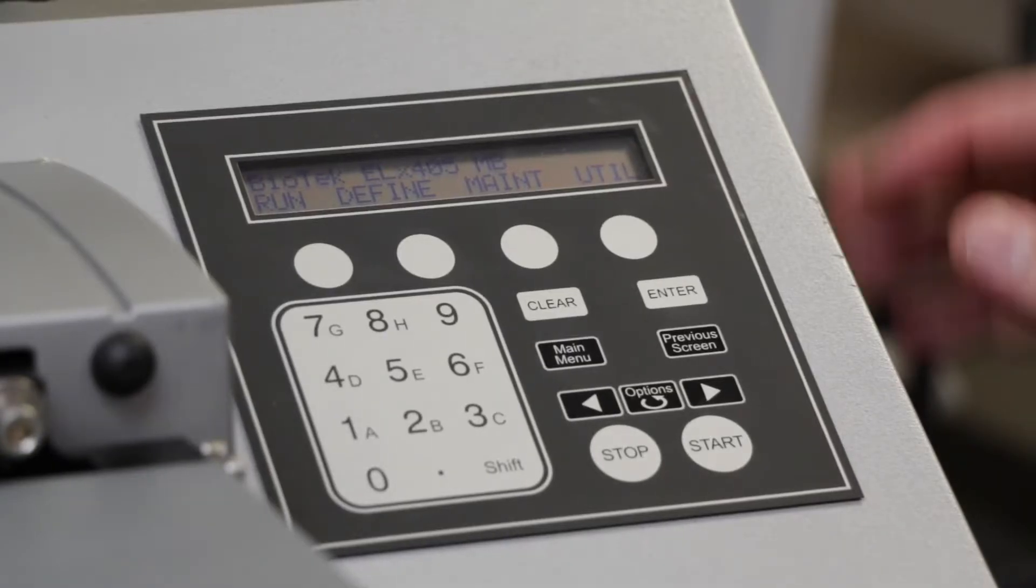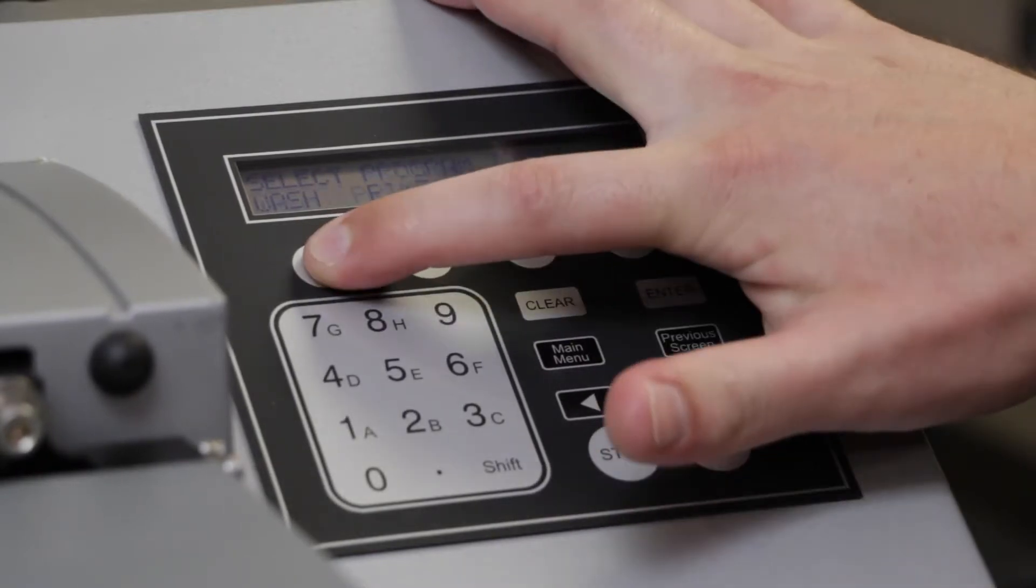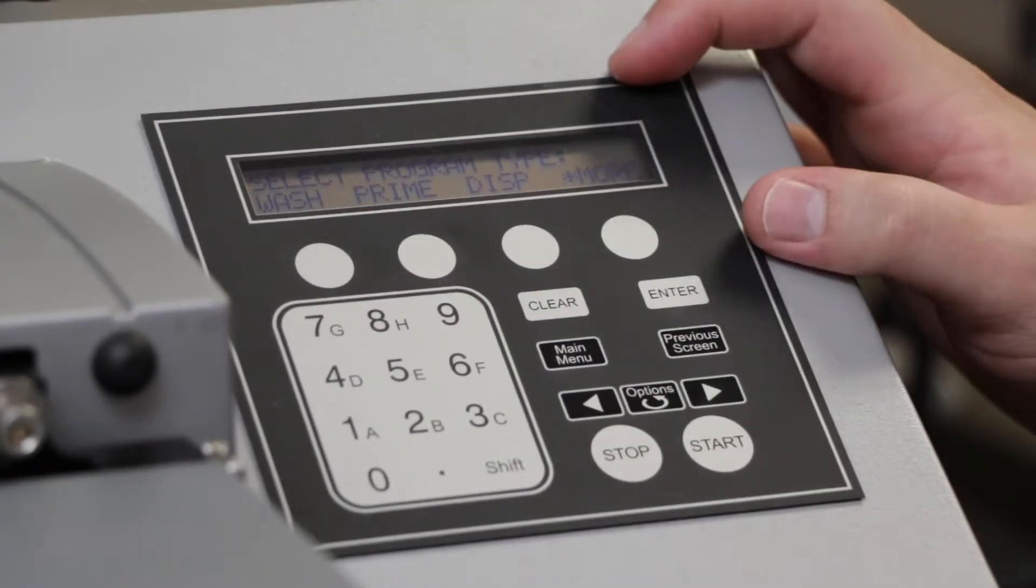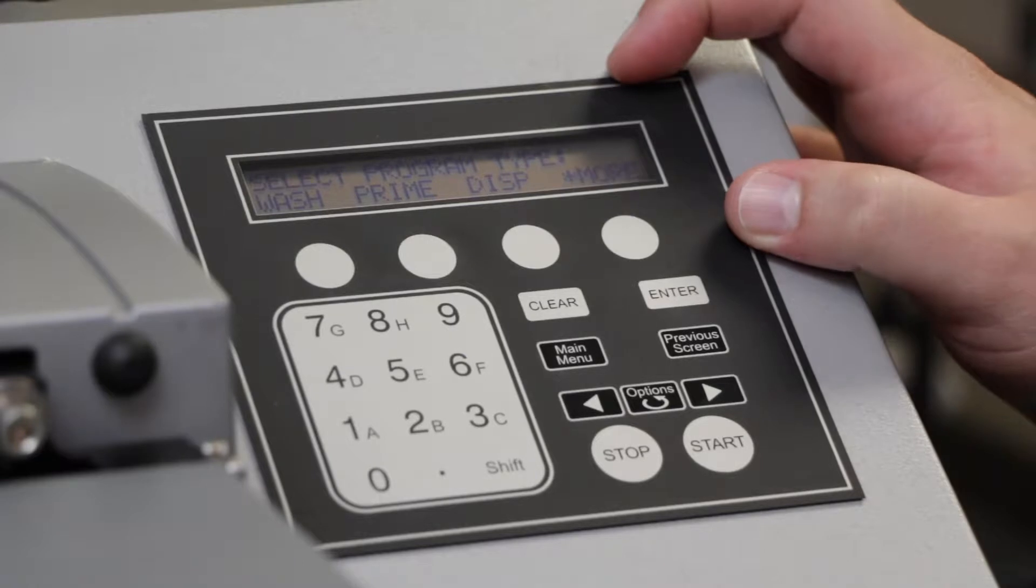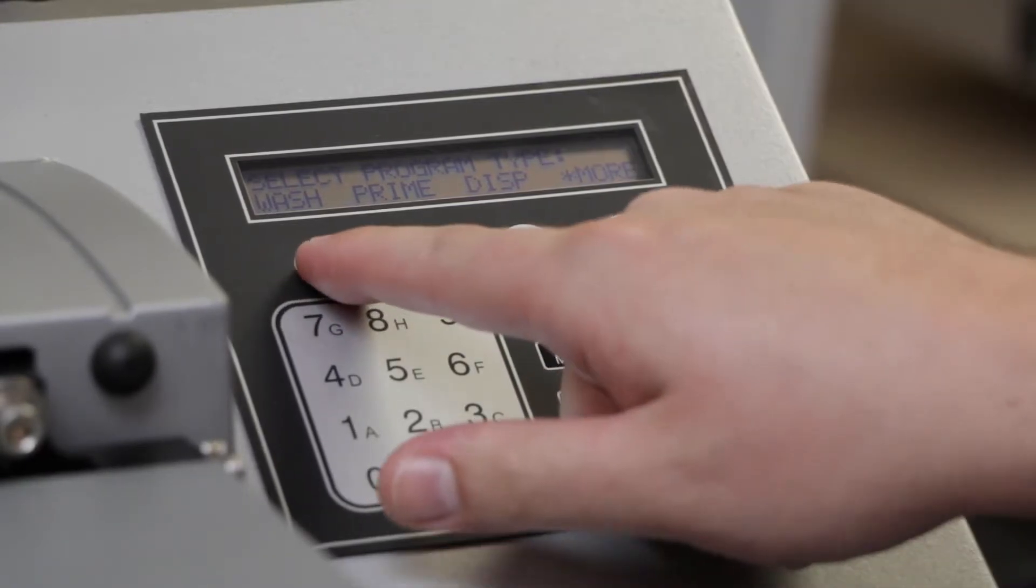To create a wash protocol, first open the Define menu, and here select Create. Once you're at this menu, you can select which specific aspects you want to create. In this case, we're going to be making a wash protocol, so we'll select the wash option.